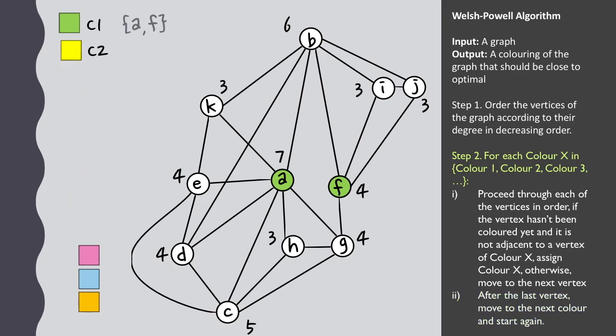Now we repeat the same procedure. a is already colored, so we'll assign b this color and c isn't connected to b, but then there are no more vertices remaining that aren't connected to either b or c.